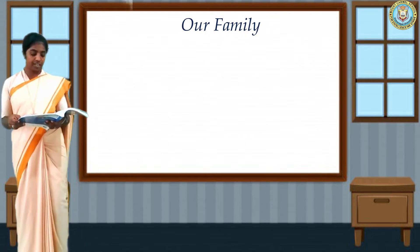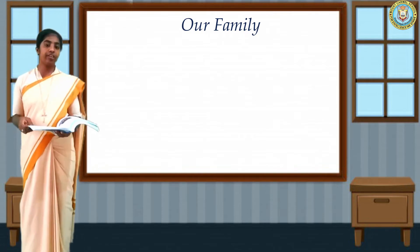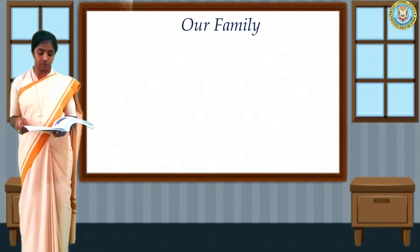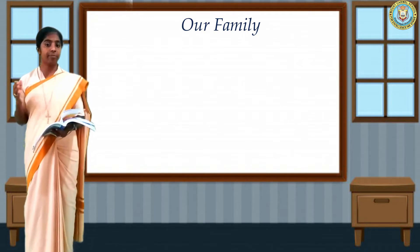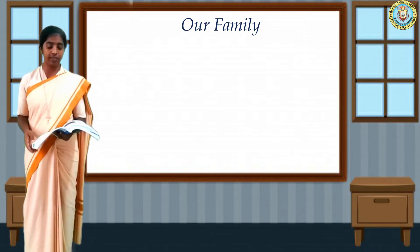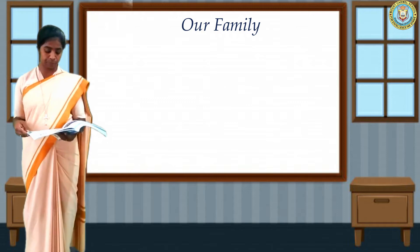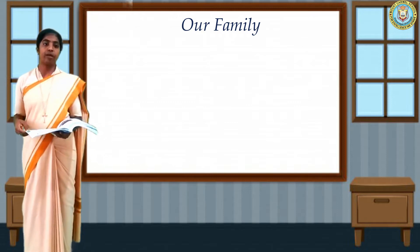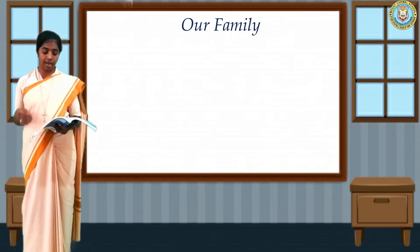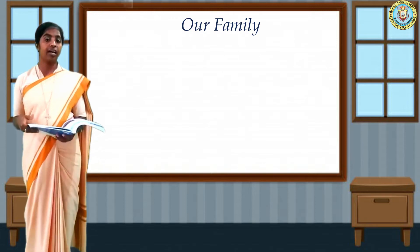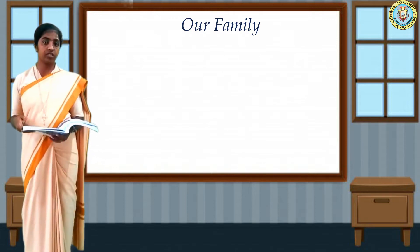The people who are related form a family. In a family we have many members. The people who are part of a family are called family members, like relatives.